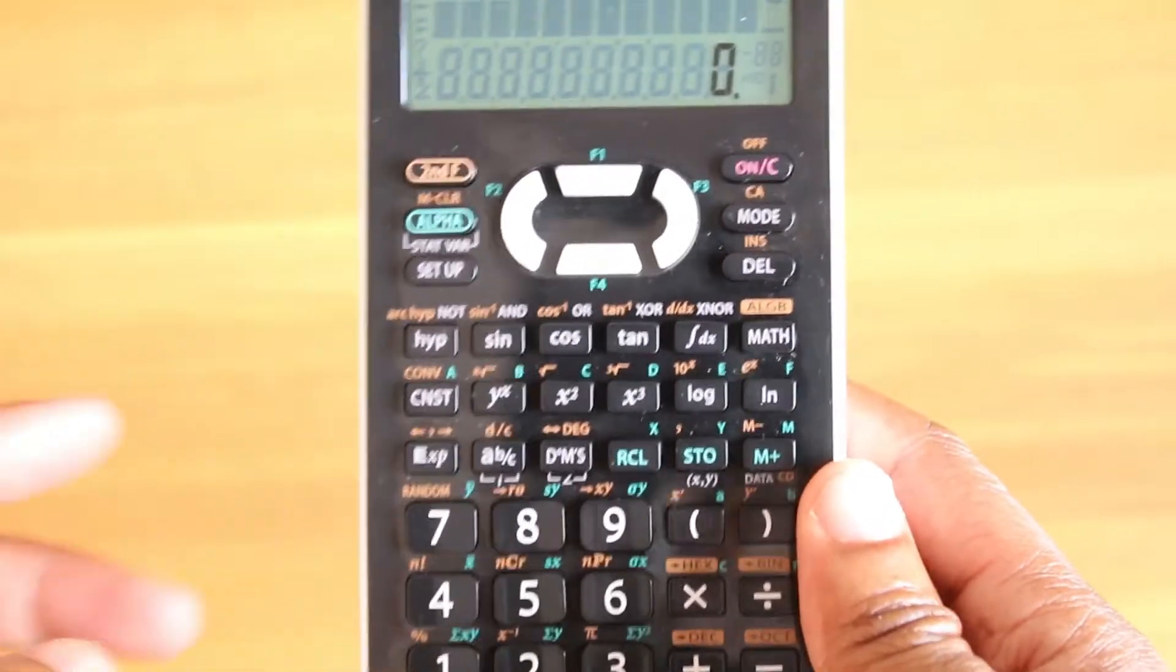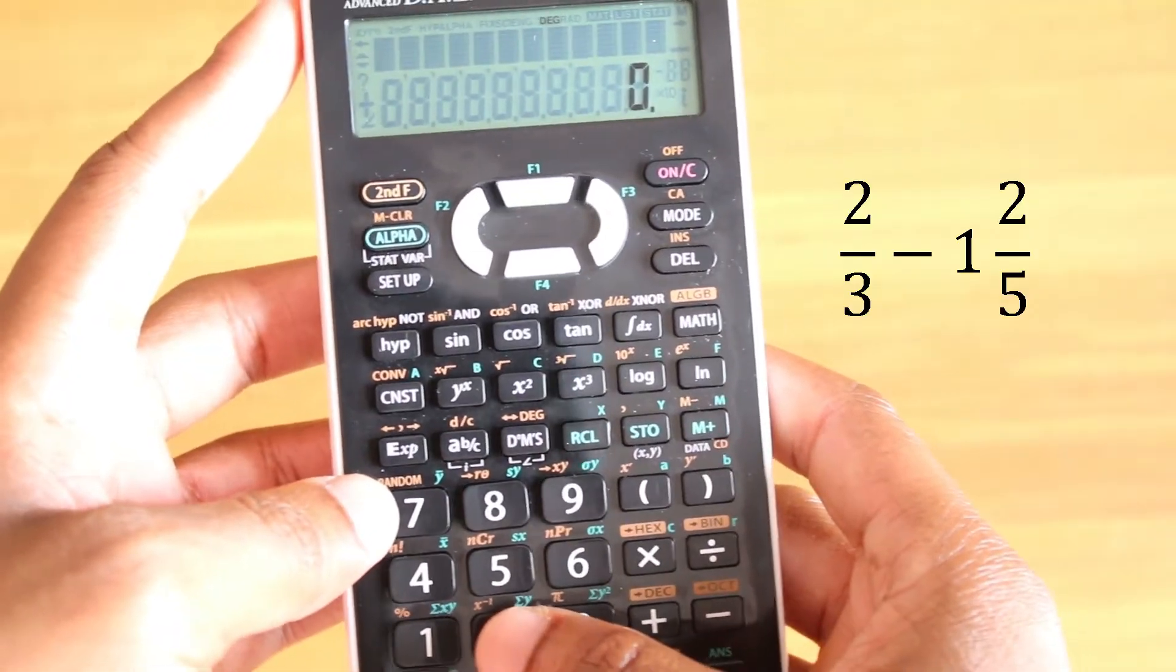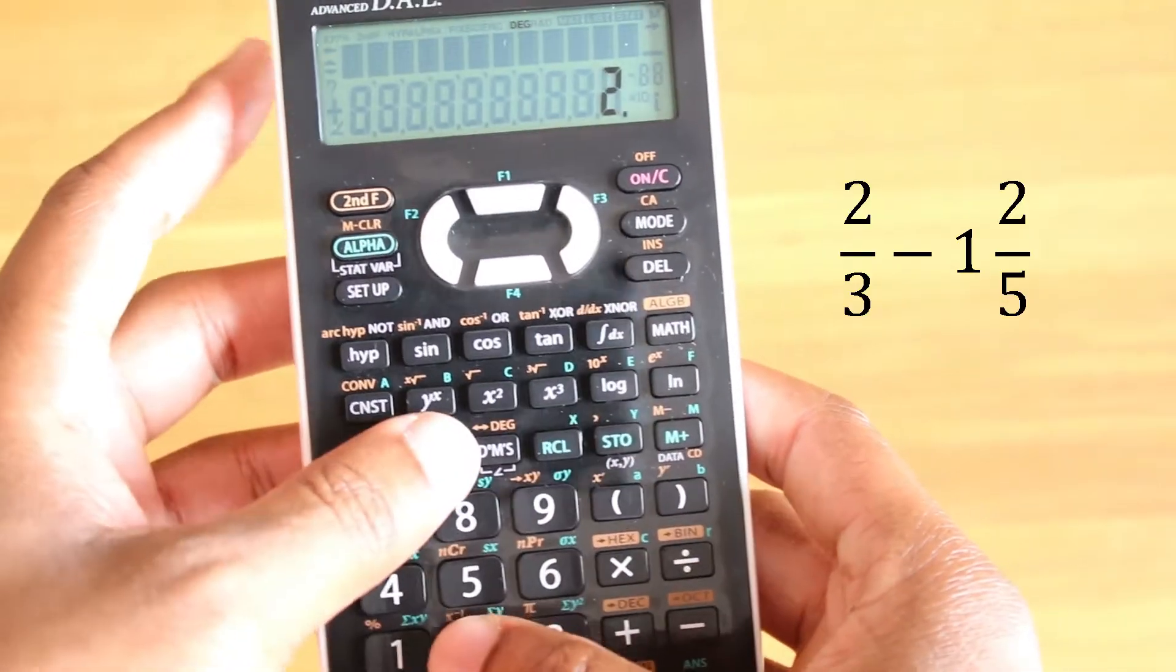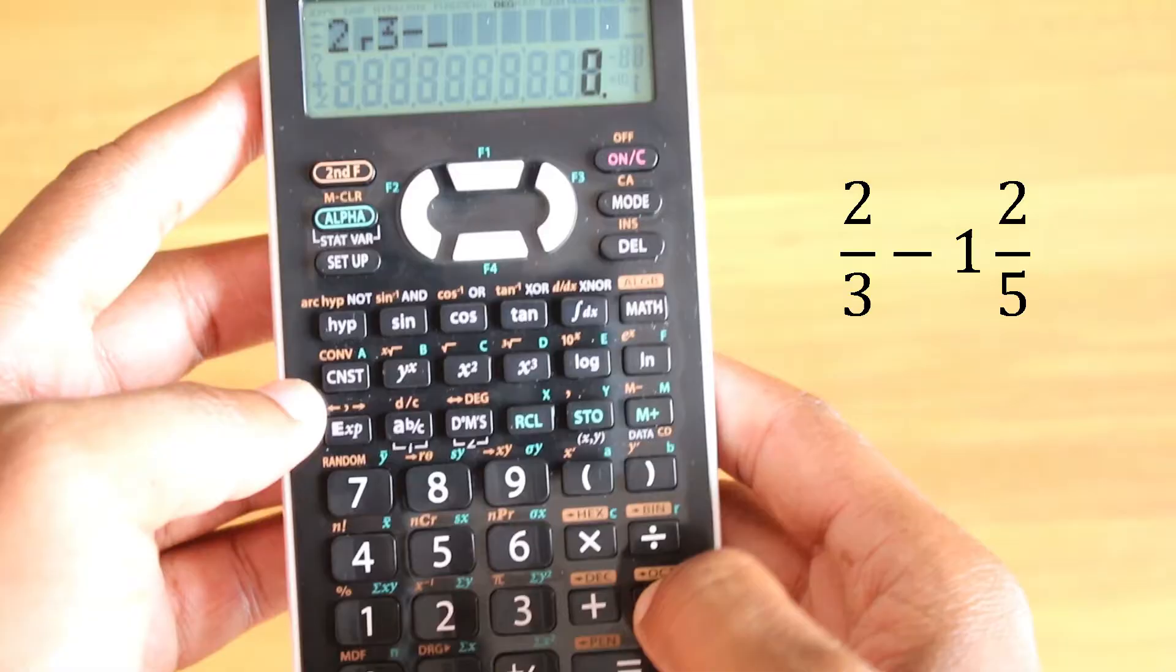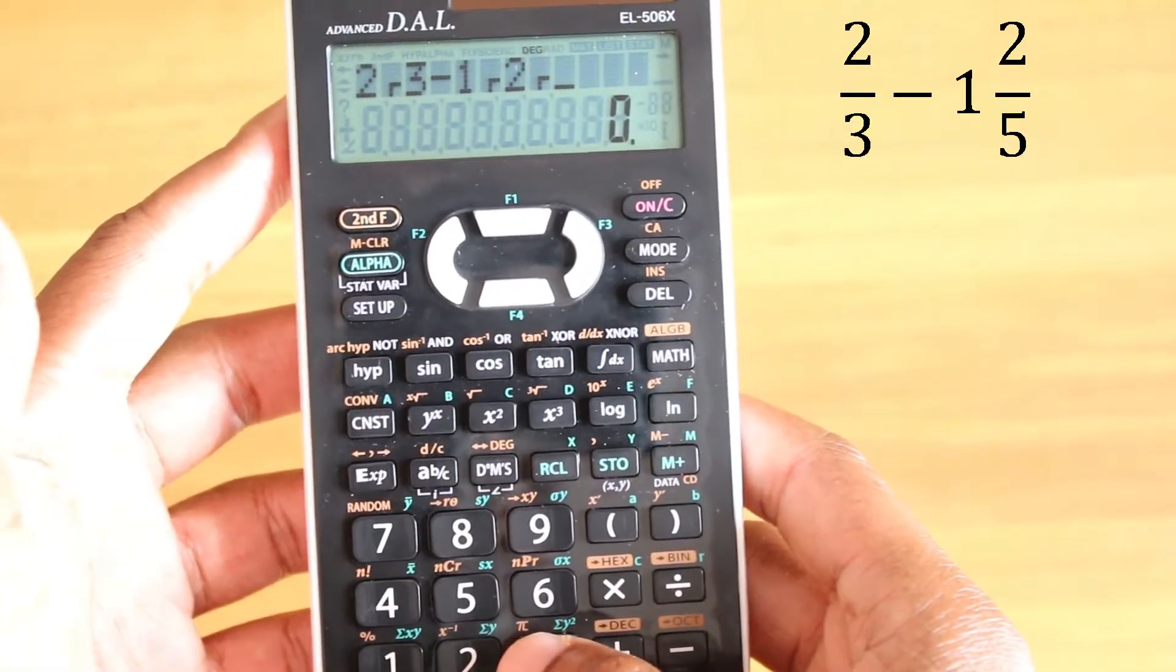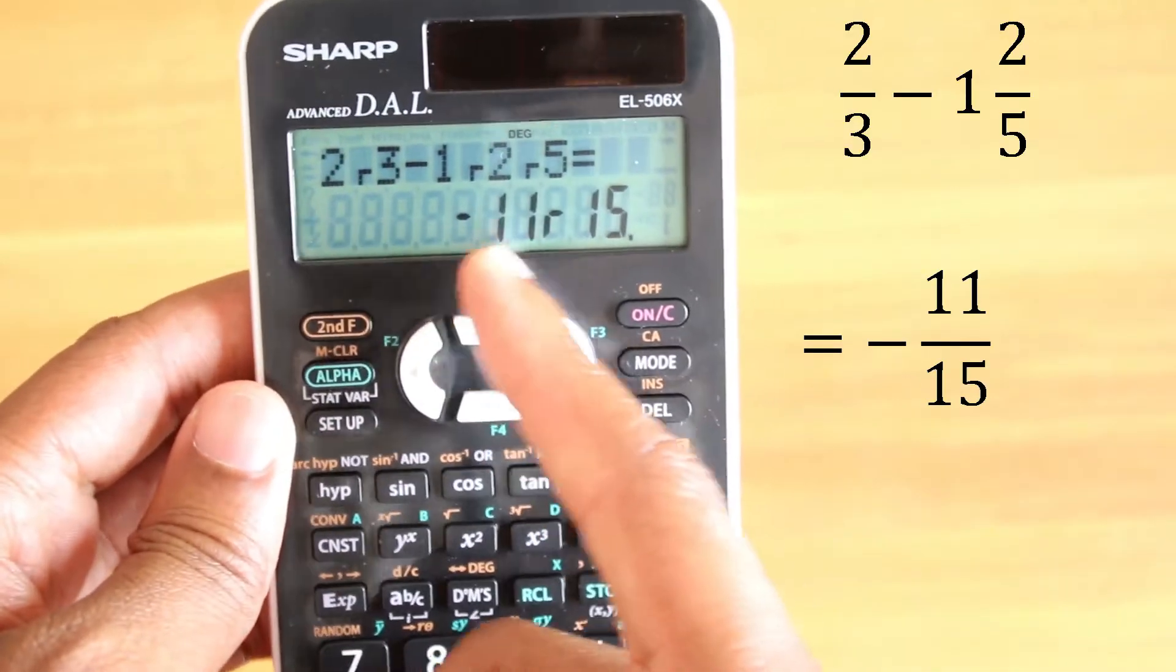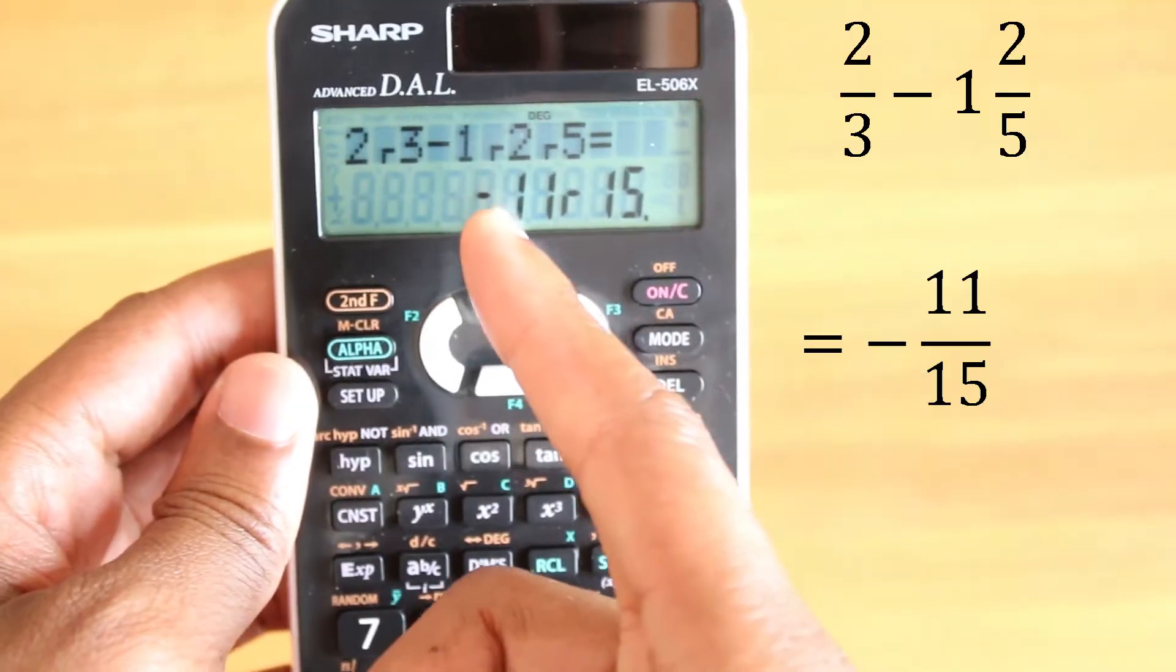It's very useful. Say we have a question: two-thirds take away one and two-fifths. This is how you'll write that: two over three subtract one and two over five. This gives an answer of negative 11 over 15.